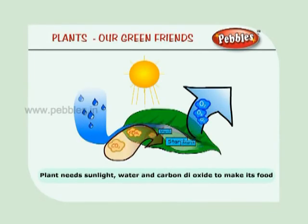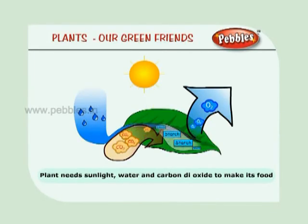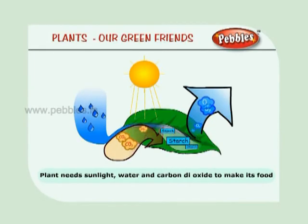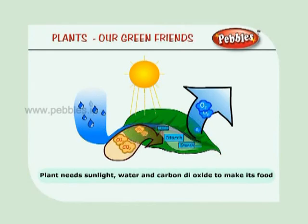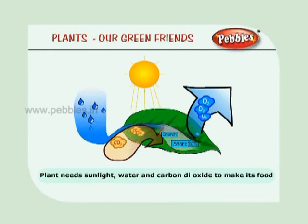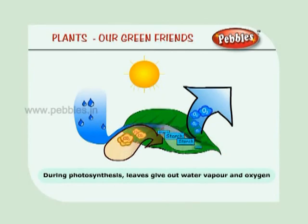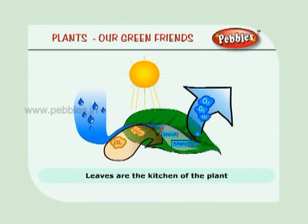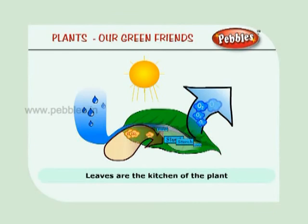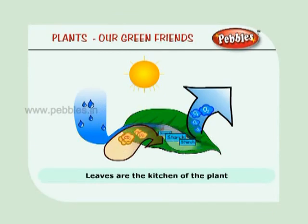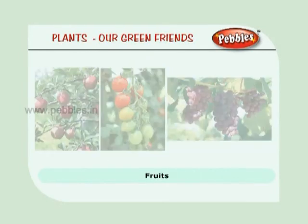The food-making process by the leaves is called photosynthesis. In the presence of sunlight, the plant puts together water from the soil and carbon dioxide from the air to make its food. During photosynthesis, the leaves give out water vapor and oxygen. Leaves are the kitchen of the plant.